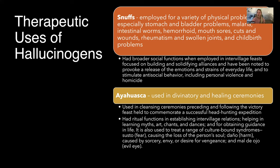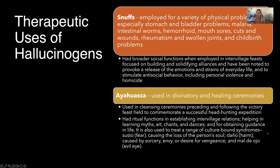Ayahuasca was used in divinatory and healing ceremonies — there were ritual functions establishing individual inter-village relations, helping in learning myths, art, chants, and dances, and obtaining guidance in life. It was also used to treat a range of culture-bound syndromes: susto, causing the loss of a person's soul; daño, caused by sorcery, envy, or desire for vengeance; and mal de ojo, which is the evil eye. The San Pedro cactus, which also contains mescaline, was used to solve problems such as witchcraft and hexes.